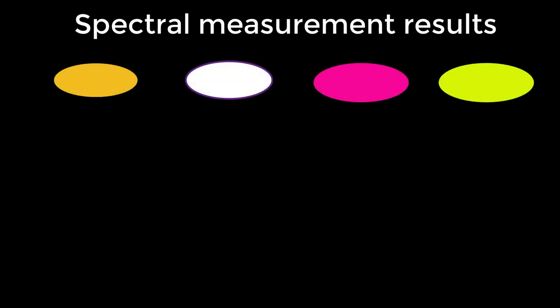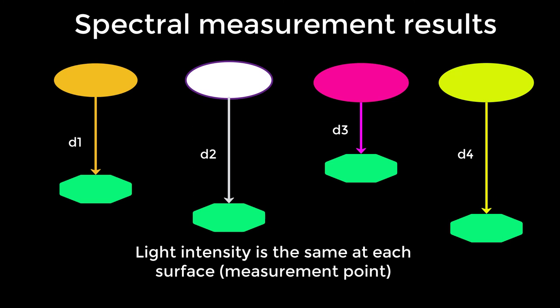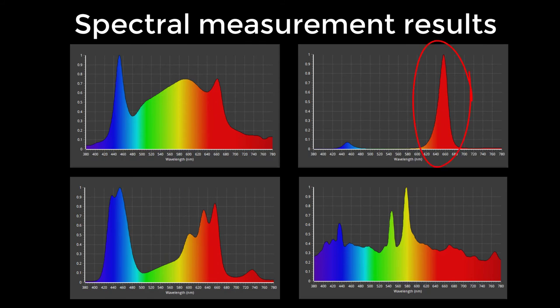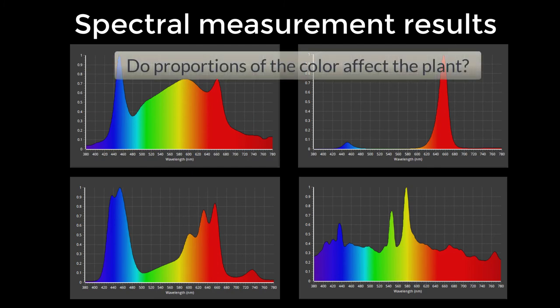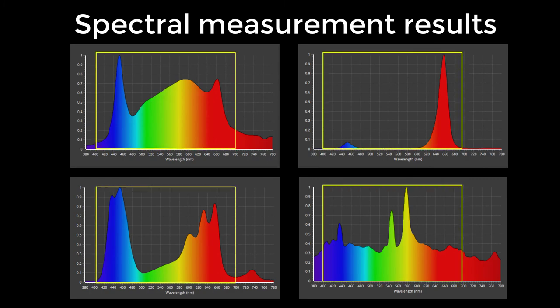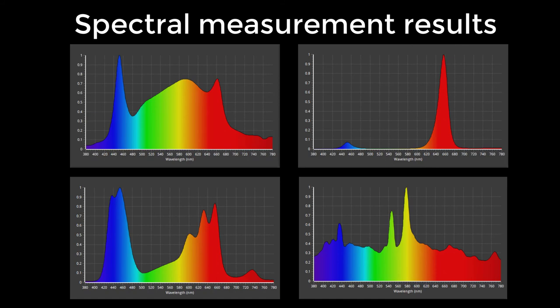For those measurements, we held the spectrometer at a distance from each light source so we would have more or less the same measured overall intensity from each of the four sources. Some sources have either no or very limited wavelengths considered green light. A couple have peaks in the blue wavelengths; one model was primarily outputting red light; a couple have far red light; and just one seems to be outputting some UV light. So if all were providing the same intensity, does the proportion of certain colors affect the plant? Do certain wavelengths modify its behavior?